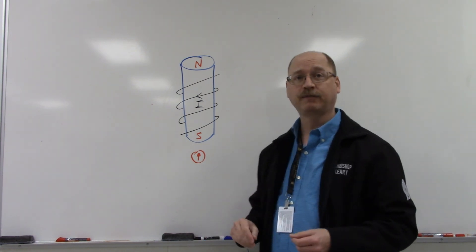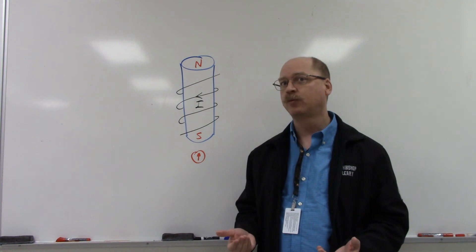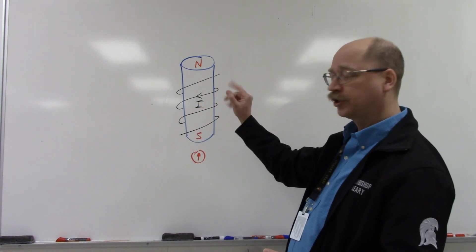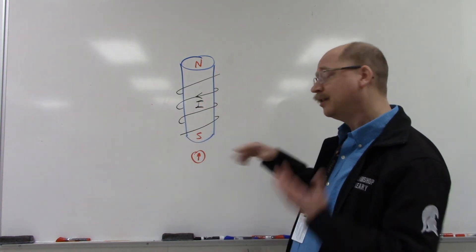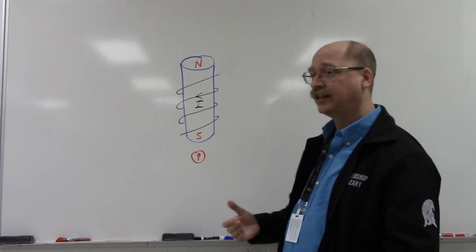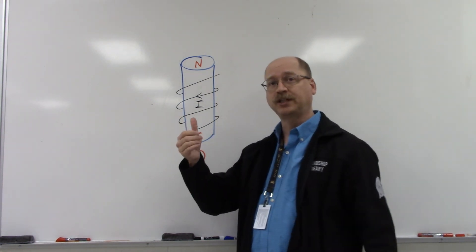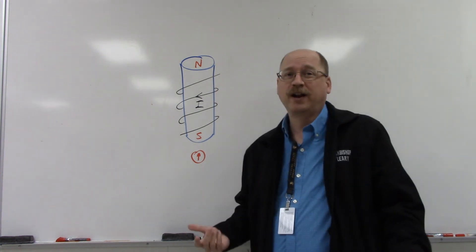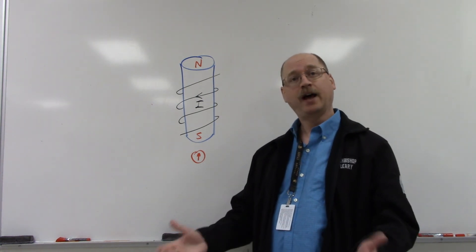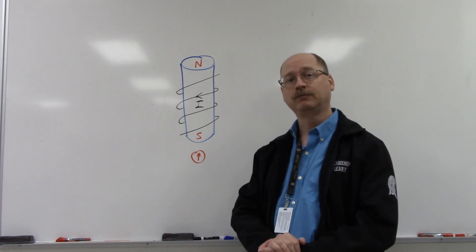Just like with first hand rule, if you did have to do something with conventional current, you would just change over to using your right hand. But otherwise, everything stays the same. Your fingertips are still the current and your thumb is still pointing to whatever end is north. Okay, I hope that helps you out with the second hand rule. Good luck with it.